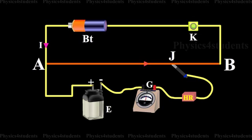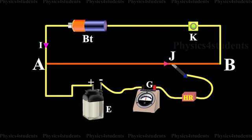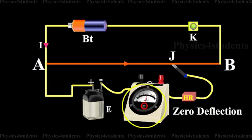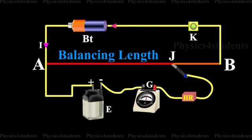If the potential difference between A and J is equal to the EMF of the cell, no current flows through the galvanometer. It shows zero deflection. AJ is called the balancing length.